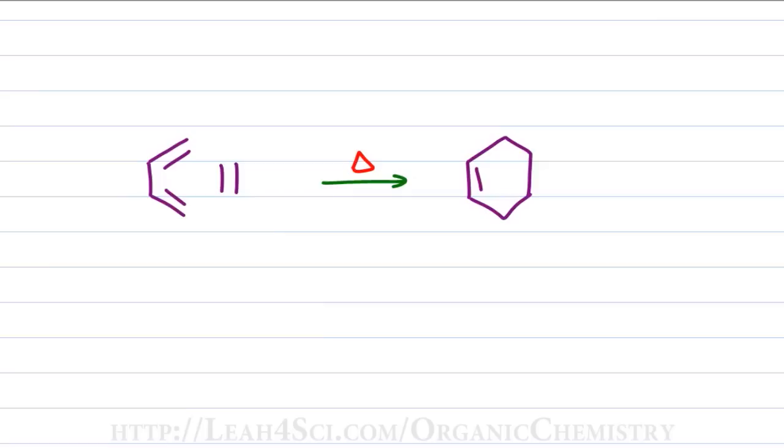The Diels Alder Reaction happens when you have a diene and a dienophile reacting with just heat to form a cyclohexene. So let's break it down.